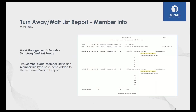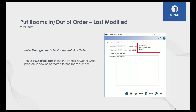The Turn Away / Wait List report has also been enhanced with a few more pieces of information — member number, member status, and membership type. The next feature is for putting rooms in and out of service. You can put a room out of service and back in service, but we've now added last modified dates so you can see who modified it, when they did it, and what time.